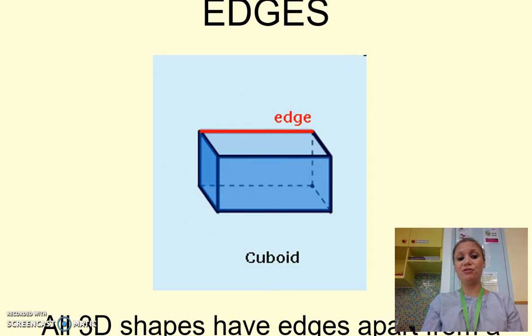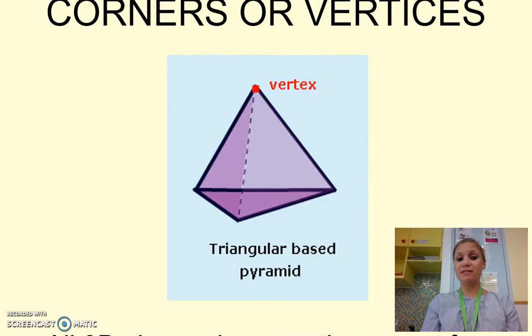An edge is the straight part of a shape, as you can see on the cube. A vertex, or vertices, are basically corners, which you can see on this pyramid.